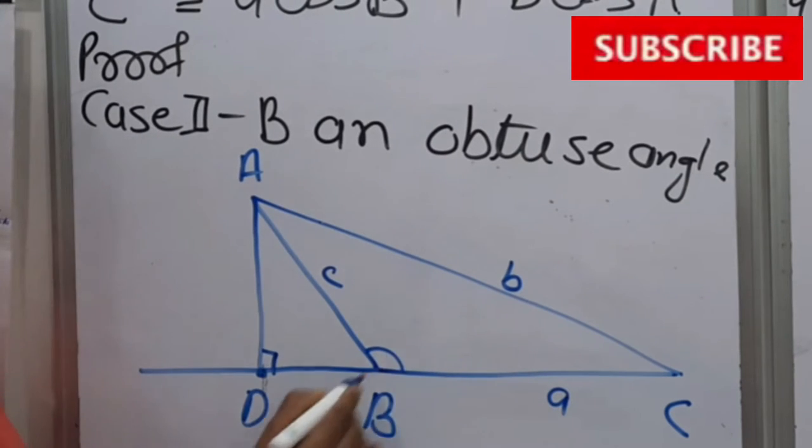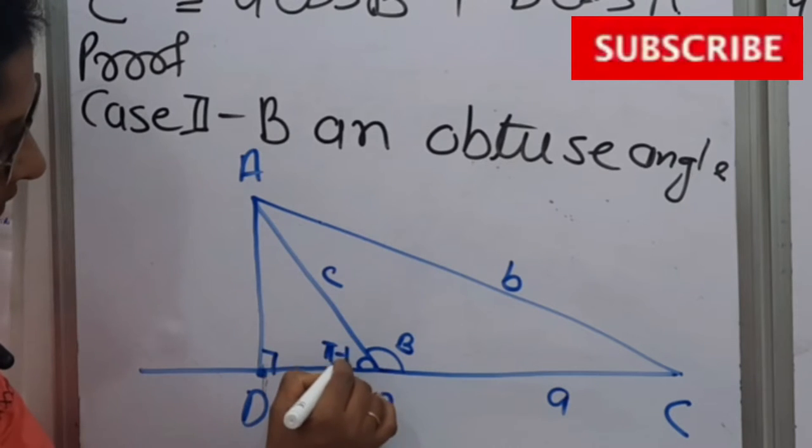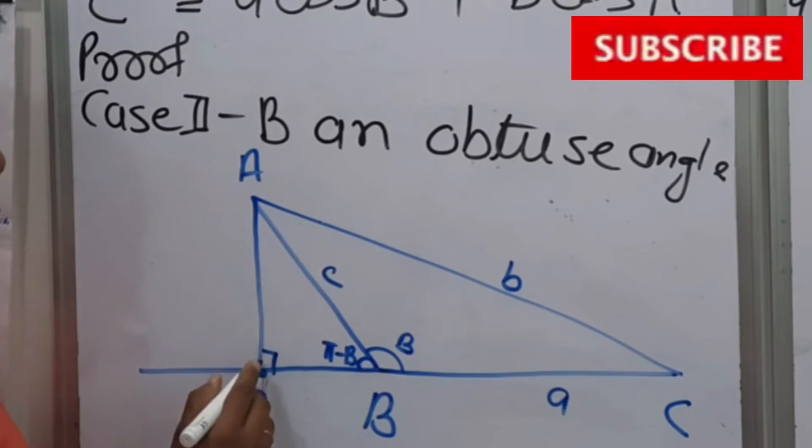This is our B. So this is π minus B. Now this is 90 degrees.